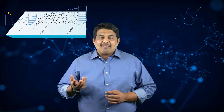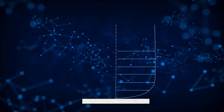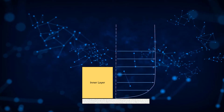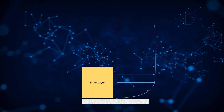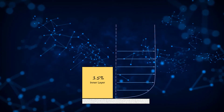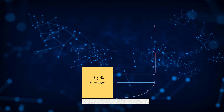Prandtl's mixing length hypothesis provides an algebraic estimate for calculating the eddy viscosity. Based on this theory, it is possible to classify the turbulent boundary layer into three different zones. The inner layer, or the near-wall region, is where viscous forces play a dominant role. This region covers about 50% of the total boundary layer thickness and can be further divided into two zones.